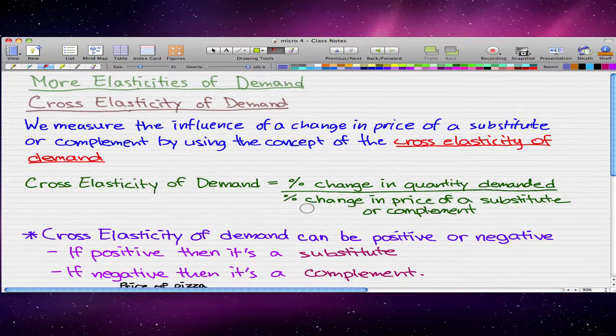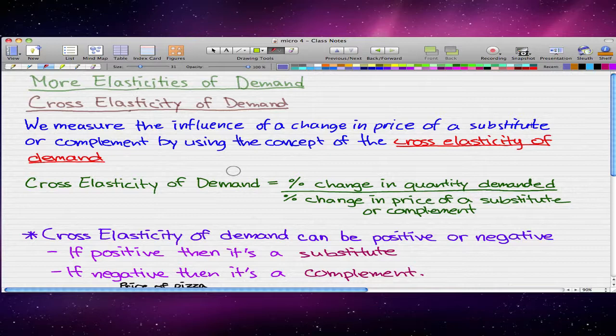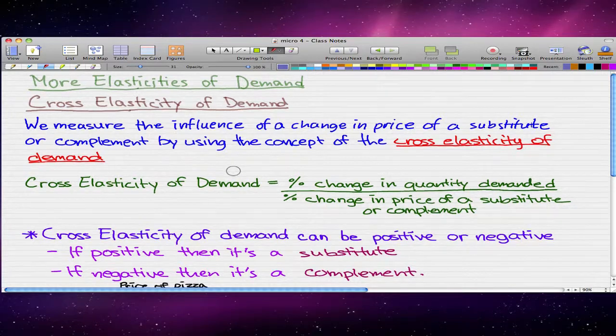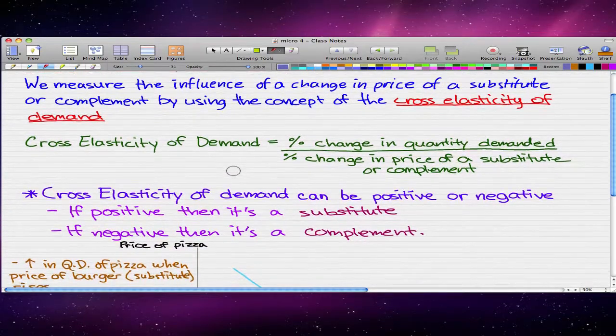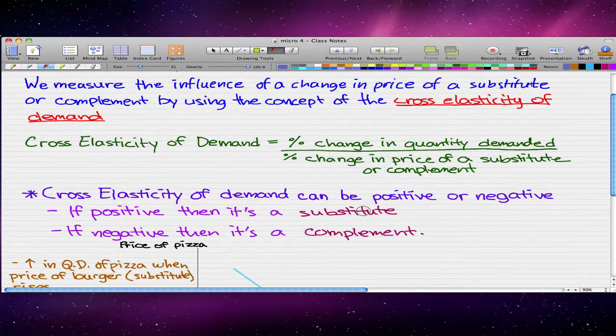So, pretty much in layman's terms, we use the cross-elasticity of demand to see how the quantity demanded of a certain good changes with respect to a price change in a substitute or complement.